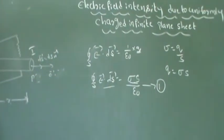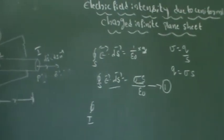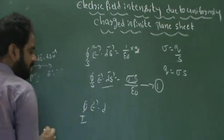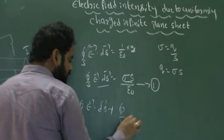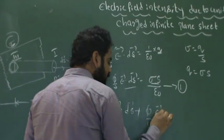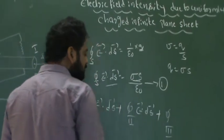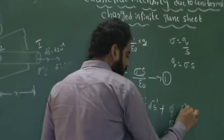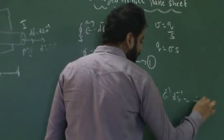Equation 1 now becomes: we divide the entire Gaussian surface into three parts. Surface integral of the first end cap of vector E dot dS, plus surface integral of the second end cap of vector E dot dS, plus surface integral of the third region (center of Gaussian cylinder) of vector E dot dS, equals 1 by epsilon naught into q.